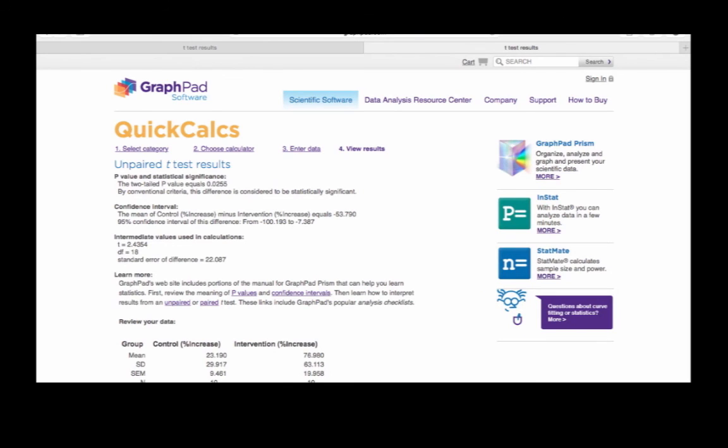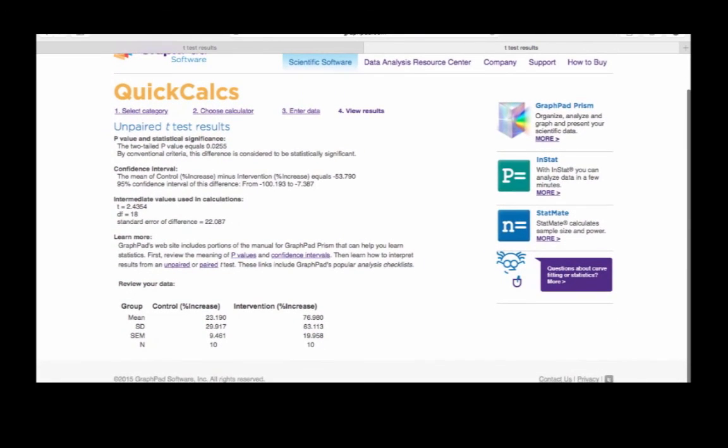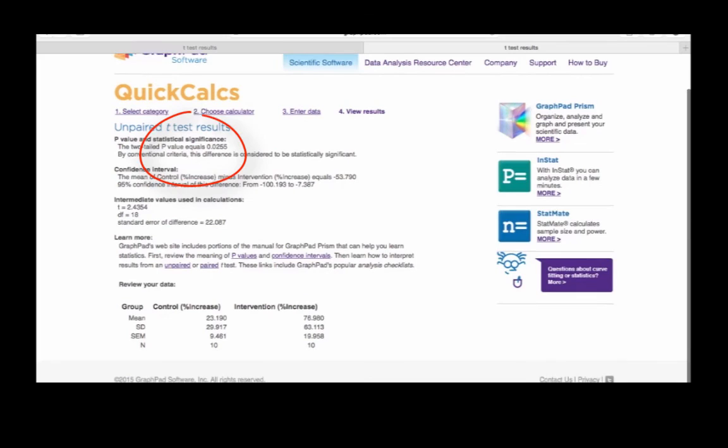What we see is that at the five percent significance level, our p-value is less than 0.05. Therefore it's not consistent with the assumption that the null hypothesis is true—in other words, that there is no significant difference. It must therefore be that there is a significant difference, and you'll see that indeed is what GraphPad reports.